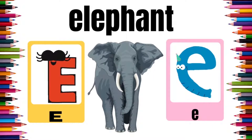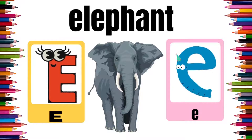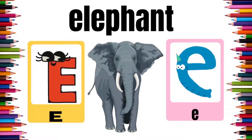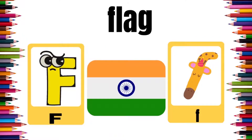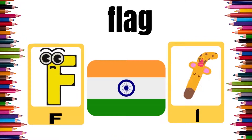E is for Elephant. E, E, Elephant. F is for Flag. F, F, Flag.